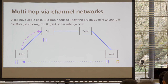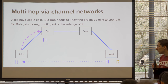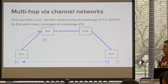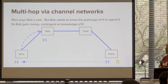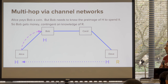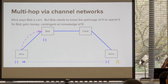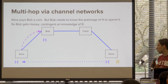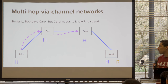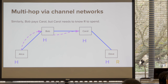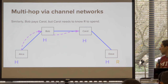Bob receives this and thinks: this is money I could spend if I knew R. But Bob does not know R. Alice tells Bob this is going to Carol. Bob forwards it to Carol and says, here's this new output in our transaction where if you know R — the preimage of H — you can take a coin. Bob and Carol only see the nodes adjacent to themselves, so Carol does not know that Alice exists in this process. Carol sends it to Dave.